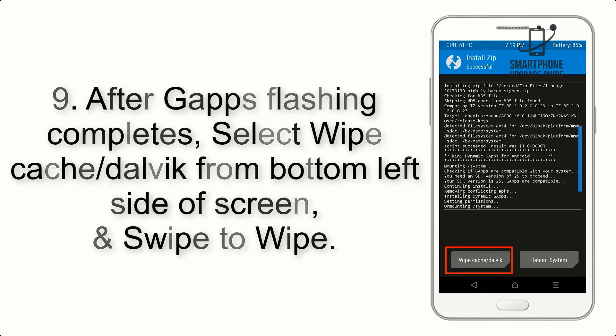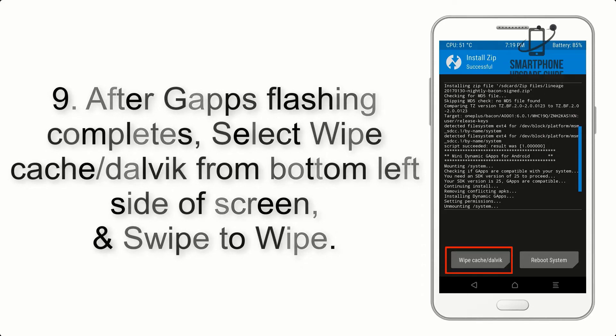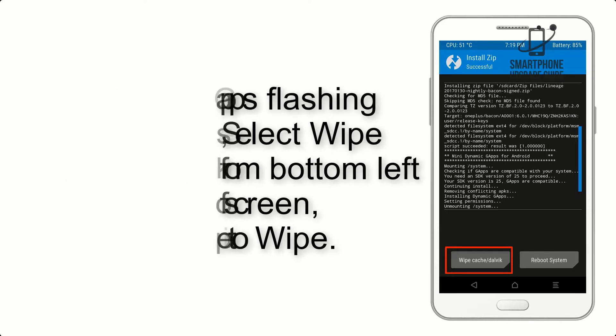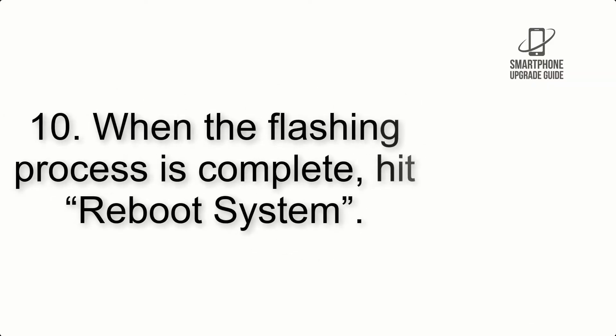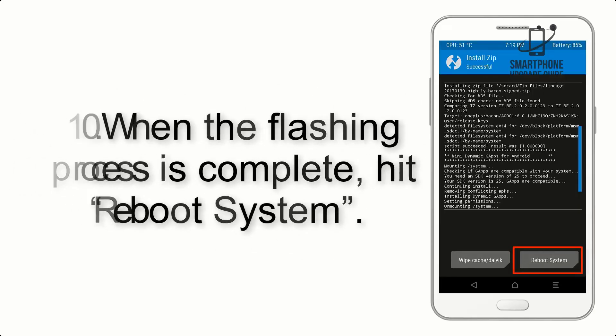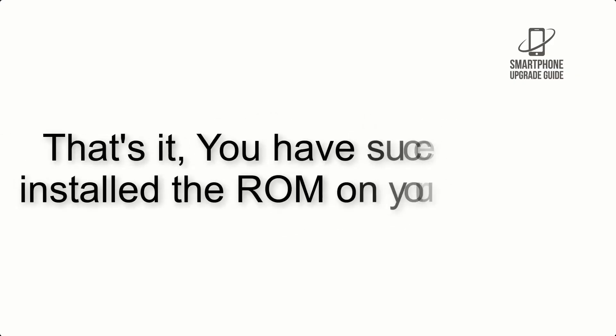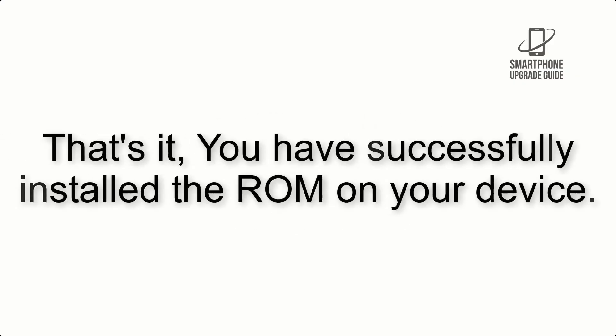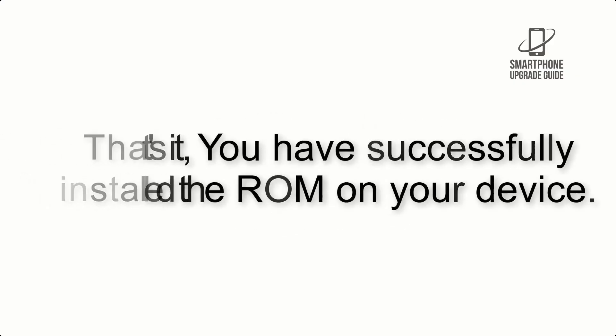Step 9: After GApps flashing completes, select Wipe Cache and Dalvik from the bottom left side of the screen and swipe to wipe. Step 10: When the flashing process is complete, hit Reboot System. That's it — you have successfully installed the ROM on your device.